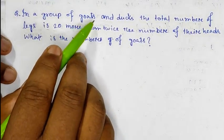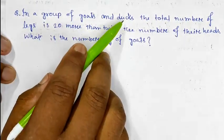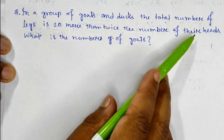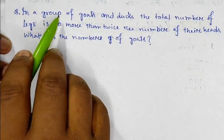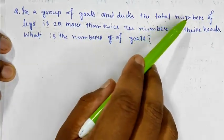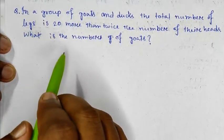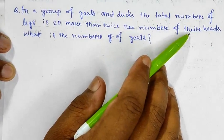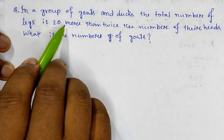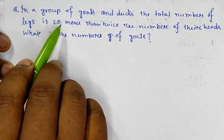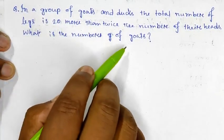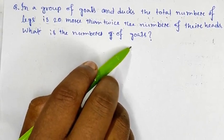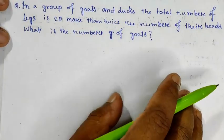In a group of cows and ducks, the total number of legs is 20 more than twice the number of their heads. What is the number of cows?